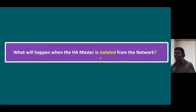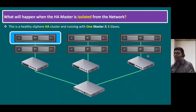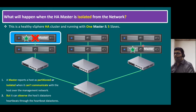What will happen when the HA master is isolated from the network? This time it is not a network-level failover affecting all hosts. All of a sudden, our HA master becomes isolated — separated from the network. That can be either an ESXi host hung state or the ESXi host CPU and memory consuming over 90%. At a certain point it may become hung and unable to send network heartbeats and data store heartbeats to all associated ESXi hosts. In that scenario, immediately it will elect a new master among the other secondary ESXi hosts.